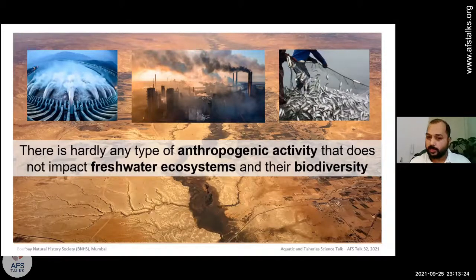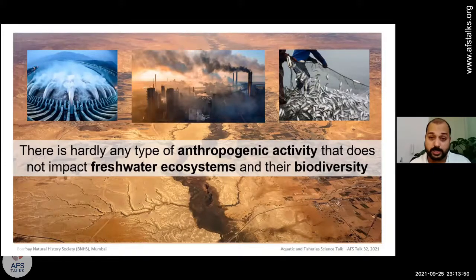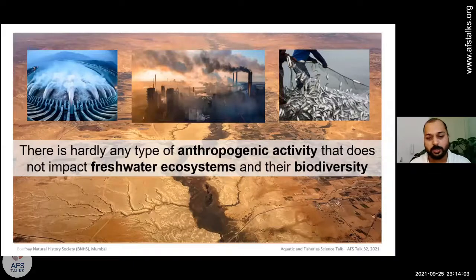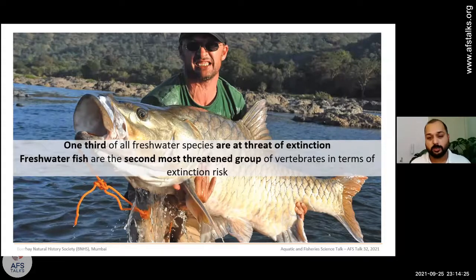Freshwater ecosystems are suffering because of multiple anthropogenic activities. We modify rivers by building dams including hydroelectric power plants and irrigation dams, destroy ecosystems through pollution, and species are going extinct due to overfishing and invasive species. All these factors are contributing to the decline of freshwater ecosystems worldwide, and the recent estimate suggests almost one-third of all freshwater species face threat of extinction.